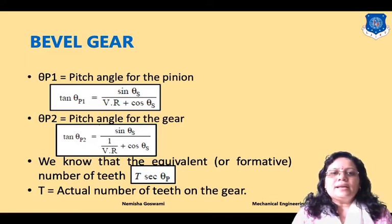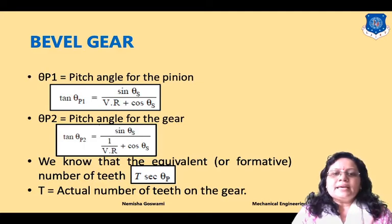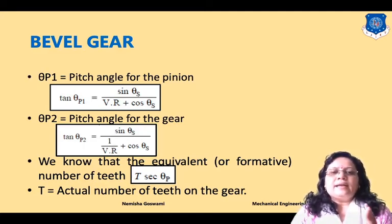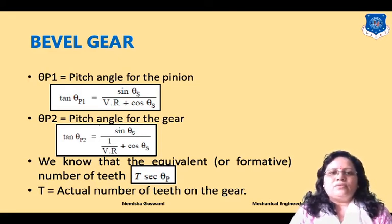The equivalent number of teeth in the case of bevel gear is equal to T multiplied by sec θp, where T is the actual number of teeth on the gear. You can put θp1 for the pinion or θp2 for the gear to find equivalent number of teeth for each.